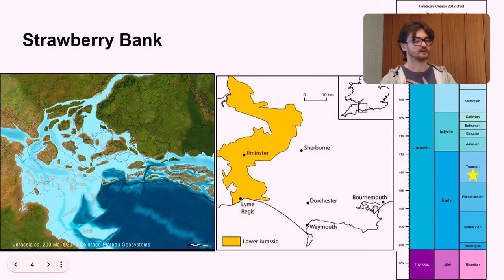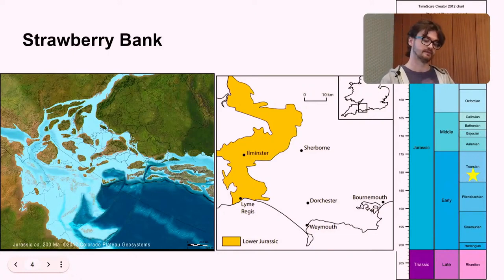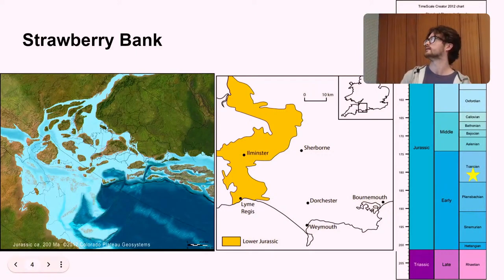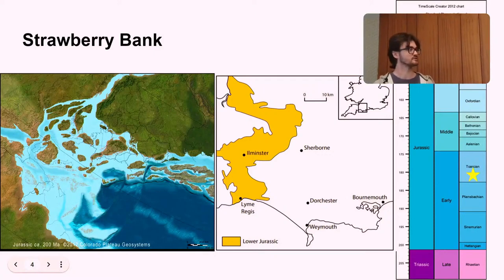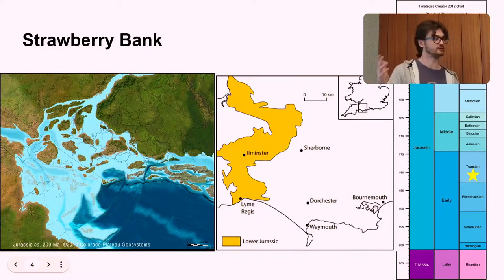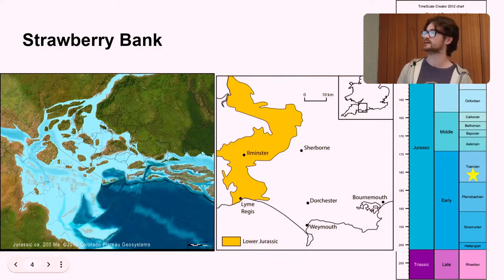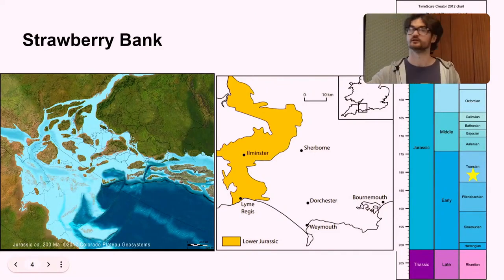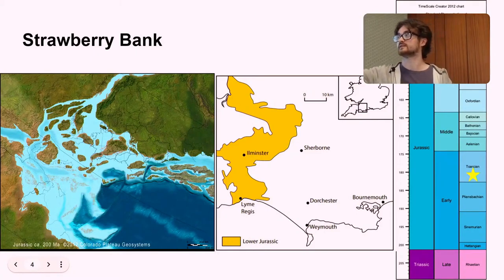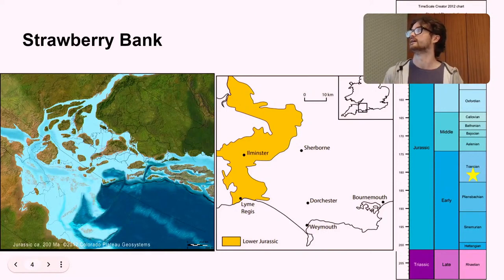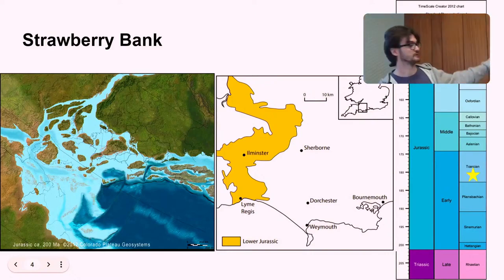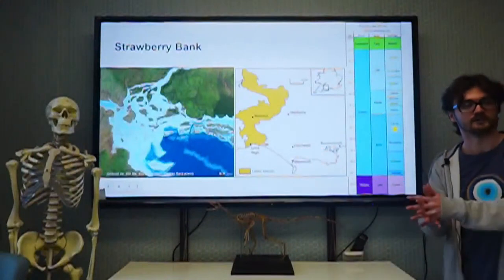So the ecosystem I was looking at was from a deposit called Strawberry Bank. And they're from the south coast of the UK, near to a town called Ilminster. So this orange band here is where the deposits are found. And they are from the lower toarcian of the lower Jurassic. So represented by this star here, about 182 to 183.5 million years ago. And this map here on the side is a map of modern day Europe, superimposed on top of Europe in the lower Jurassic. So you can see that sea levels were much higher than they are now. Much of the UK is underwater.